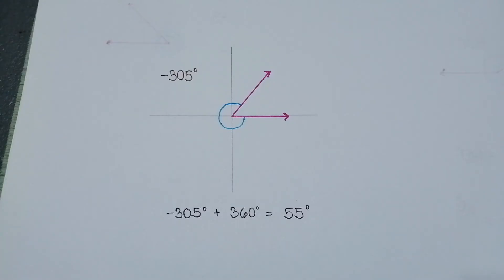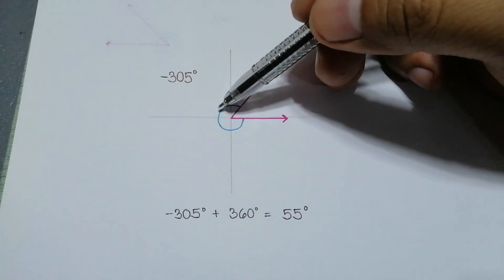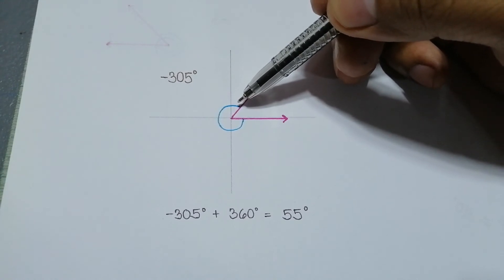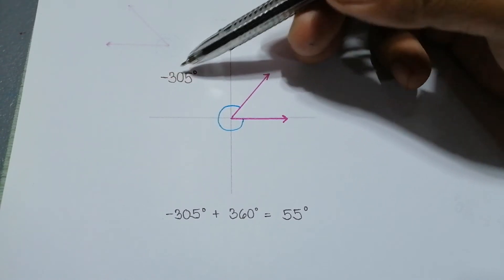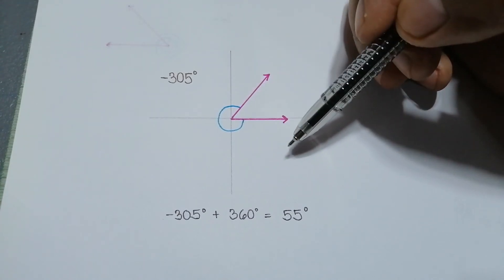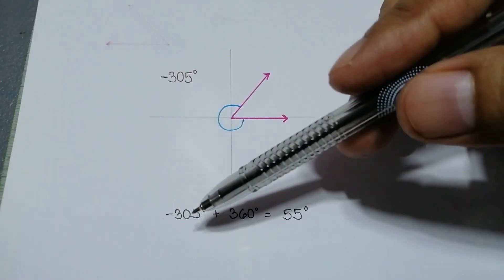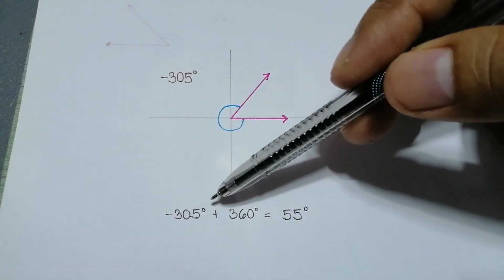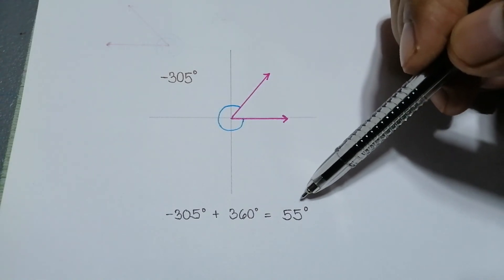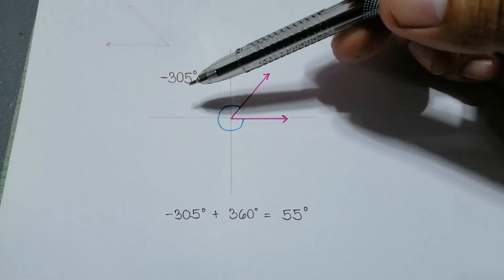Now let us get the reference angle if the given angle is a negative angle. If our terminal side moves clockwise, it forms a negative angle. In our example, we have an angle that measures negative 305 degrees. To get the reference angle, first determine the coterminal angle of the given angle in positive. That is, negative 305 degrees plus 360 degrees — we will be able to get the value of 55 degrees, which is the coterminal angle of negative 305 degrees.